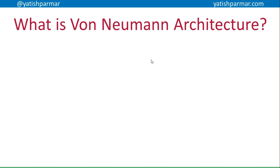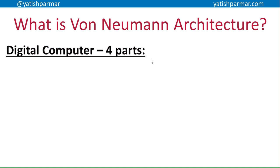Von Neumann architecture was slightly different because it was a digital computer which made use of stored programs. So the instructions and the data are held in shared memory. Some form of stored program did exist before — if you think about punch cards, you can go look that one up. But this was a radical departure from analog computers.